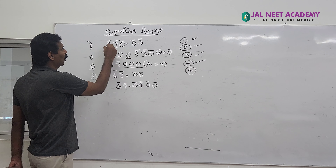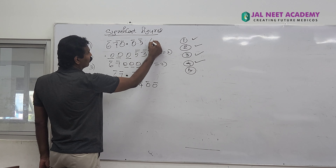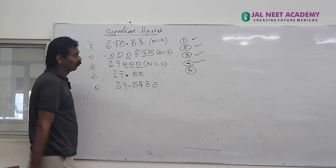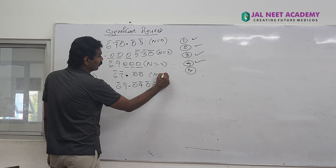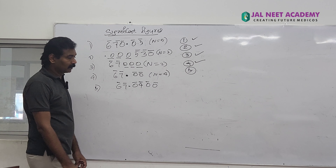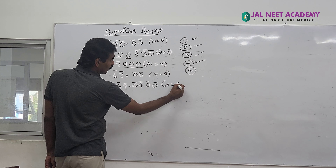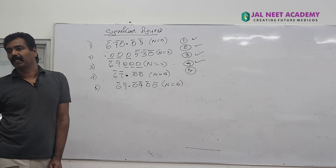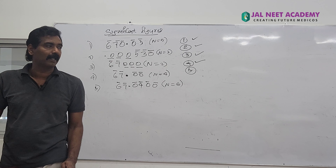First number: 1, 2, 3, 4, 5 — there are 5 significant figures. Next number: there are 4 significant figures. Next number: there are 6 significant figures. So which rules apply here?